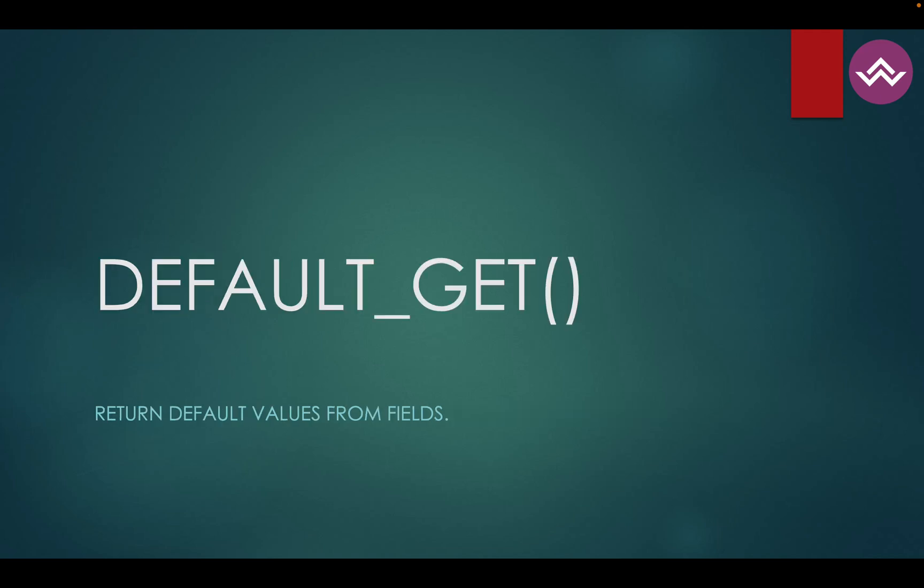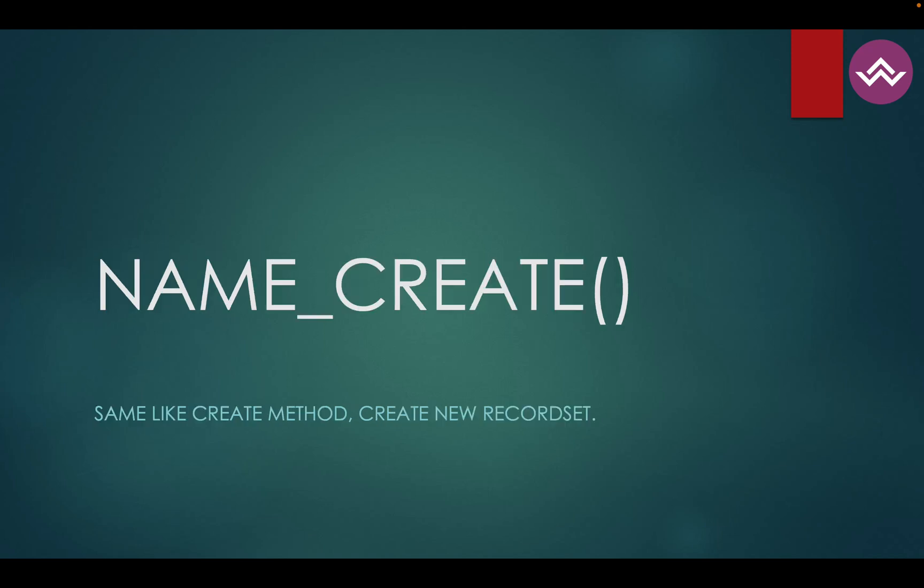The default_get method is used when you create a new record and want to set or retrieve default values for particular fields. The name_create method is a very interesting method — similar to create, but it only adds one field, which is the name or display_name field. This method is very popular in a specific context, so we will cover it in a separate session.